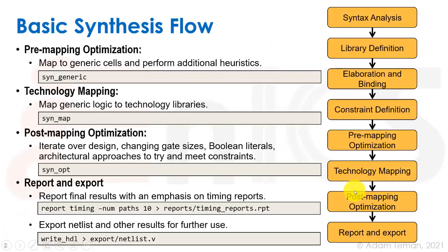Well let's go back to our basic synthesis flow. The synthesis flow is shown starting with syntax analysis going to library definition, elaboration and binding, constraint definition, pre-mapping optimization, technology mapping, post mapping optimization and finally reporting and exporting. In the cadence commands for this we have three parts of the synthesis process itself. Syngeneric maps to generic cells and performs additional heuristics. Then we do technology mapping with synmap and finally we have synop which iterates over the design, changes gate sizes, Boolean literals, architectural approaches to try and meet the constraints.